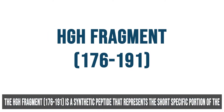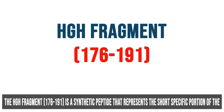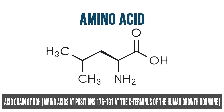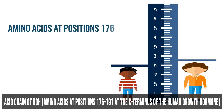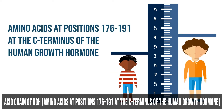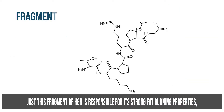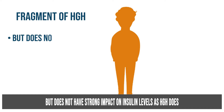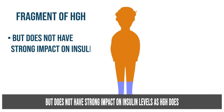HGH Fragment 176-191 is a synthetic peptide that represents a short specific portion of the amino acid chain of HGH — amino acids at positions 176 to 191 at the C-terminus of human growth hormone. Just this fragment of HGH is responsible for its strong fat burning properties, but does not have a strong impact on insulin levels as HGH does.